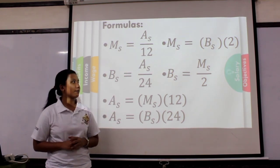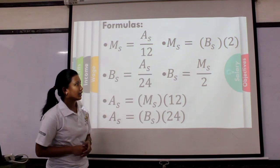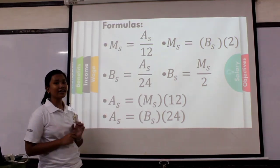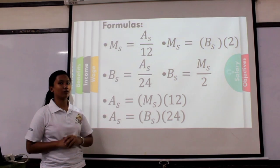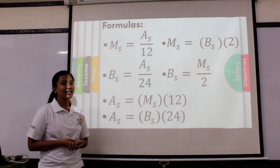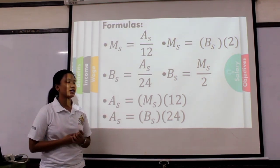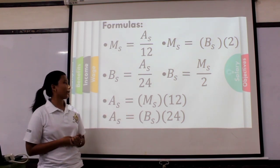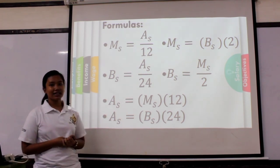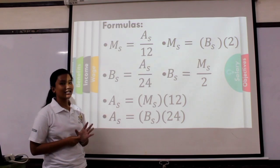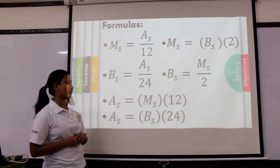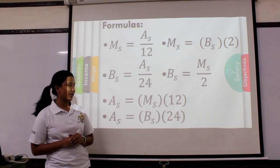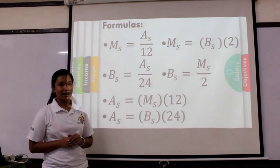Another formula: bimonthly salary is equal to monthly salary divided by 2 — since you receive twice in a month. Then, for the annual salary, we have monthly salary times 12, since there are 12 months in the year. And annual salary is also equal to bimonthly salary multiplied by 24.